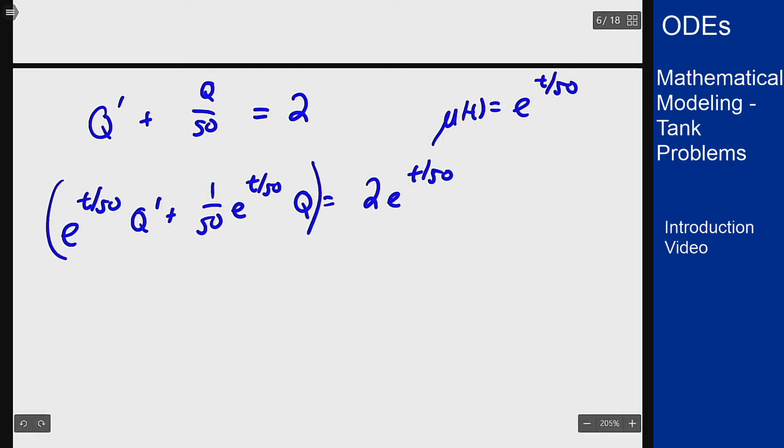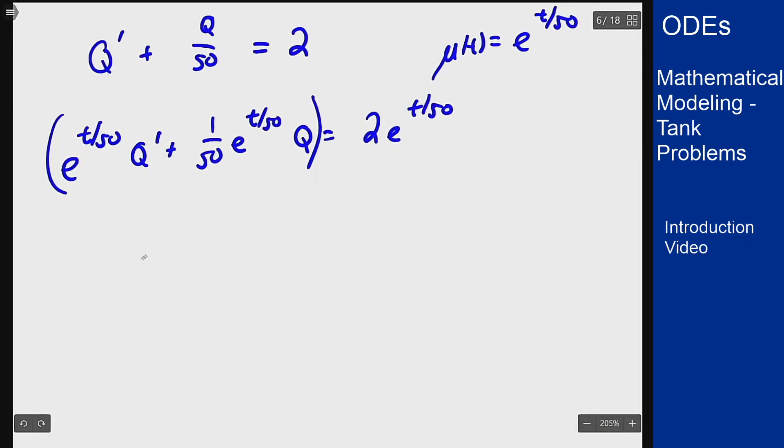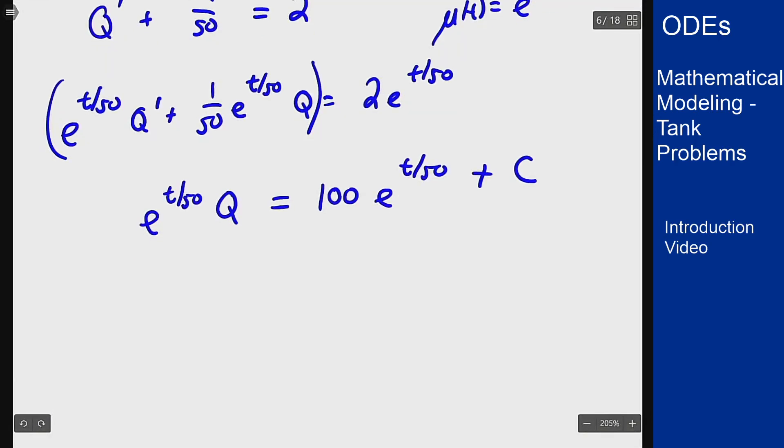This side is a product rule derivative. I want to integrate both sides. I will get this being e^(t/50) times Q equals the integral of 2e^(t/50) which is going to be 100, dividing by 1/50, times e^(t/50) plus C. Or Q(t) = 100 + Ce^(-t/50).